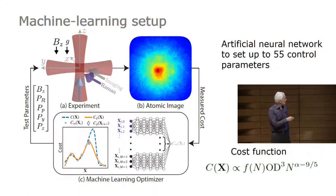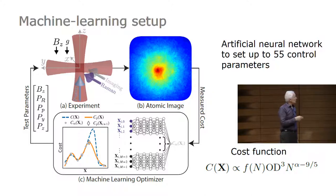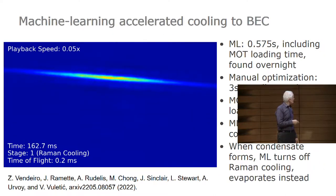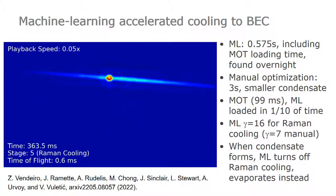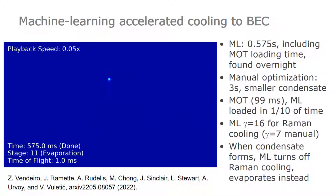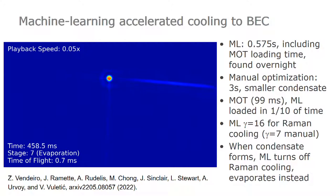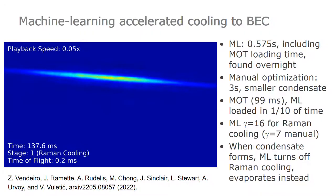We constructed a cost function from two parameters — optical depth and atom number — that was fed into the artificial neural network algorithm. We also allowed the algorithm in a separate stage to optimize the MOT loading into the cross-dipole trap. This movie is slowed down by a factor of 20, so you can identify various stages. There's a loading into one dipole trap, it applies Raman cooling for a few hundred milliseconds, and then the algorithm decided — once a small BEC was formed — to switch off the Raman cooling and perform evaporation. This is not what we told it to do, but that's what it came up with.